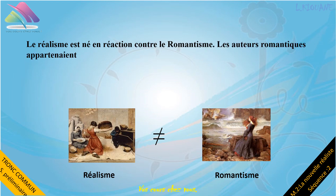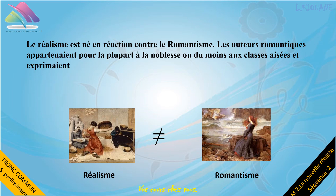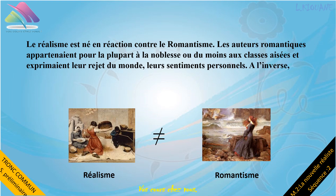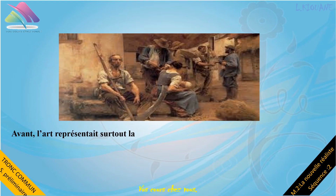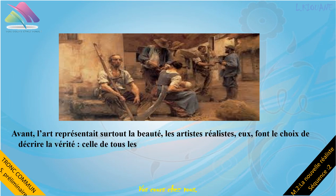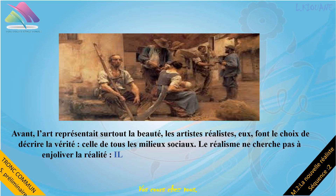Les auteurs romantiques appartenaient pour la plupart à la noblesse ou du moins aux classes aisées et exprimaient leur rejet du monde, leurs sentiments personnels. À l'inverse, les auteurs réalistes appartiennent à différentes classes sociales et ne parlent pas d'eux-mêmes, mais du monde qui les entoure. Autrement dit, avant, l'art représentait surtout la beauté. Les artistes réalistes, eux, font le choix de décrire la vérité, celle de tous les milieux sociaux. Le réalisme ne cherche pas à enjoliver la réalité, il la reproduit telle qu'elle est.